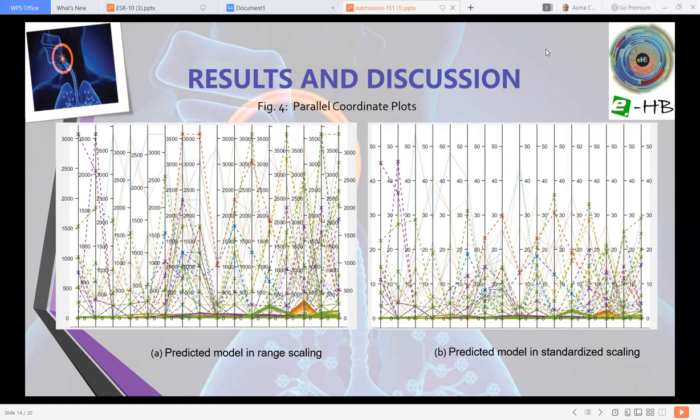Figure four shows the parallel coordinate plot. Plot H shows predicted model in range scaling and B shows predicted model in sunrise scaling. The crosses show the incorrect predictions.